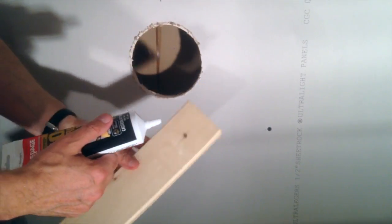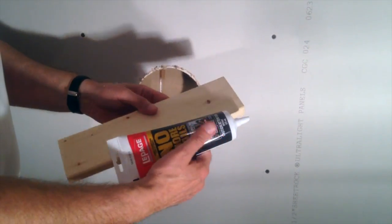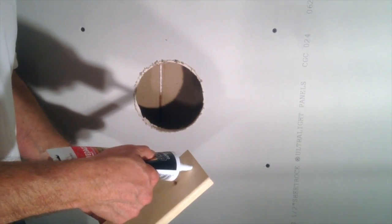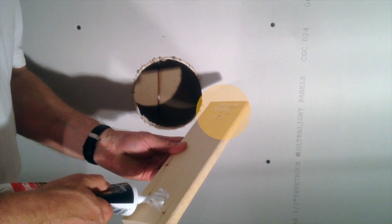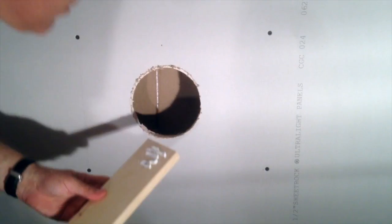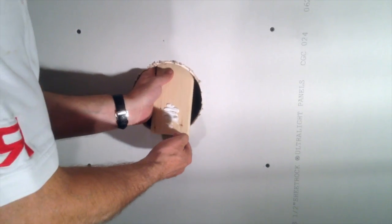So to do the patch, basically take a piece of wood and some construction adhesive because we want to glue this and make sure that there's no buzzing. Put it in.